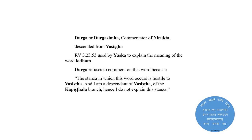There have been a few commentators of the Nirukta, the most important of whom is Durga or Durga Simha, an ascetic descended from Vasistha who lived in a hermitage near Jammu in the 13th century CE. There is an interesting episode in his commentary: Yaska uses a stanza from Rigveda 3.23.53 to explain the meaning of the word Lodham. Durga refuses to comment on this because, quote, 'the stanza in which this word occurs is hostile to Vasistha, and I am a descendant of Vasistha of the Kapisthala branch, and hence I do not explain this stanza,' unquote. It is interesting to note that the Vedas too sometimes showed the base instincts of people; in fact, Yaska says that some of the Vedic stanzas are imprecatory.